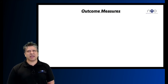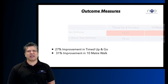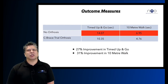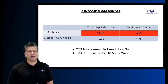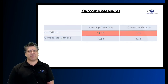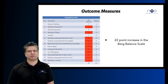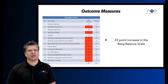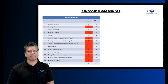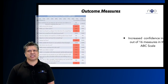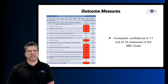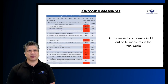Outcome measures were captured at baseline and at the end of the eight-week period. Jonathan showed a 27% improvement in timed up and go and a 31% improvement in the 10-metre walk test. He also had a 22-point increase in the Berg Balance Scale, and in 11 of the 16 outcome measures in the ABC Scale he showed increased confidence.